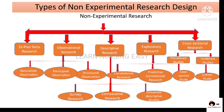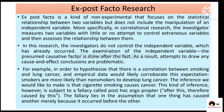The types of non-experimental research design are classified into five: ex post facto research; observational research, further classified into naturalistic observation, participant observation, and structured observation; descriptive research, classified as survey, comparative, and univariate descriptive research; exploratory research, classified as correlational research, predictive correlation research, and case control study and cohort study; and cross-sectional or longitudinal research, which are prevalence and incidence studies.